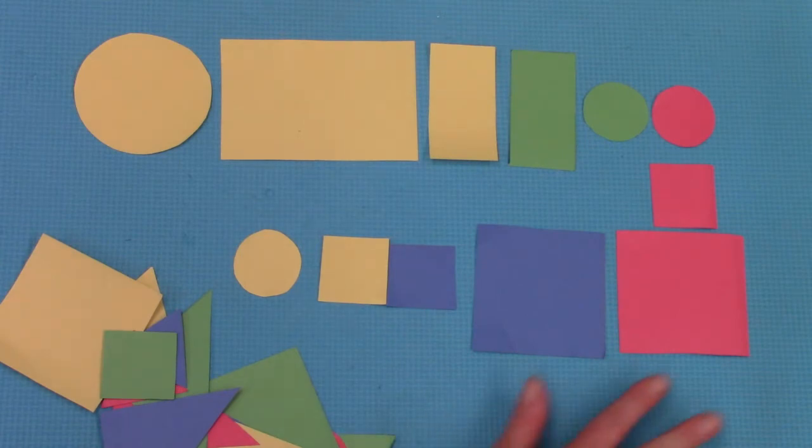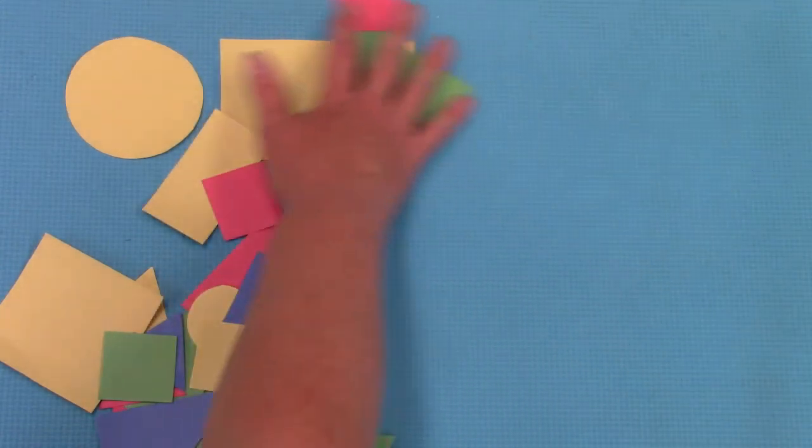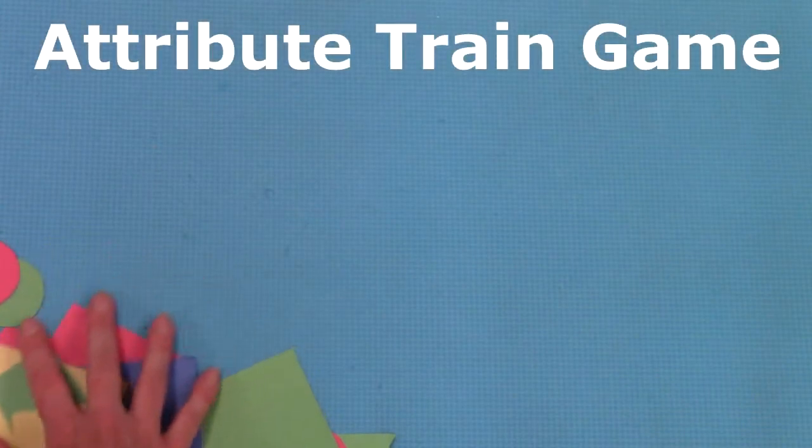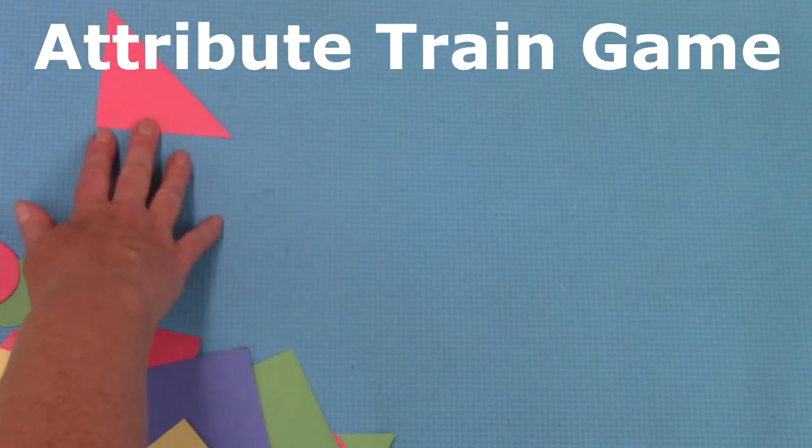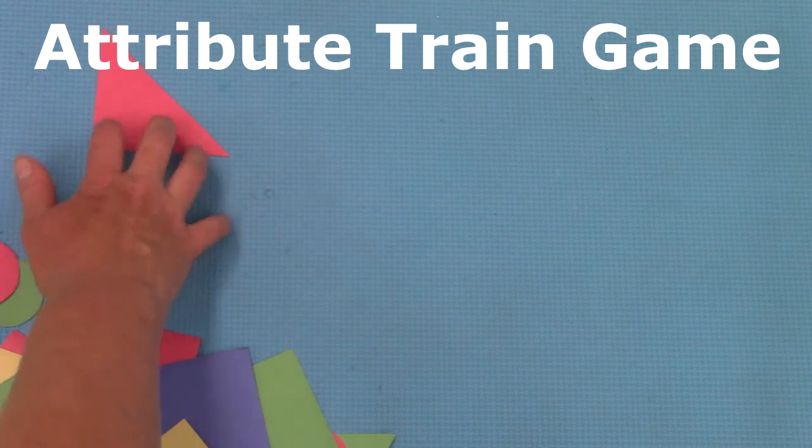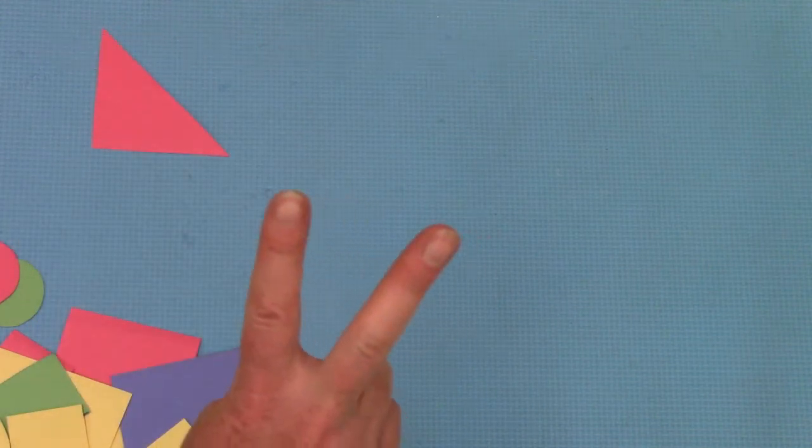Well today we're gonna do something different. We are gonna play the attribute train game, but we are going to have our shapes be different in two ways and alike in only one way.